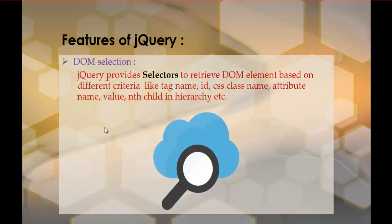DOM Selection: Suppose if I want to select an HTML element on my webpage, how can I select it? In JavaScript we learned how to select an element — we can select by tag name, ID, class name, etc. But how can we achieve the same thing in jQuery?